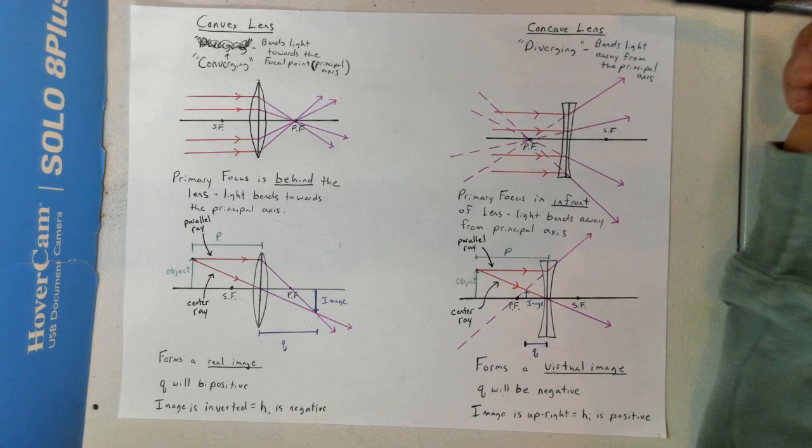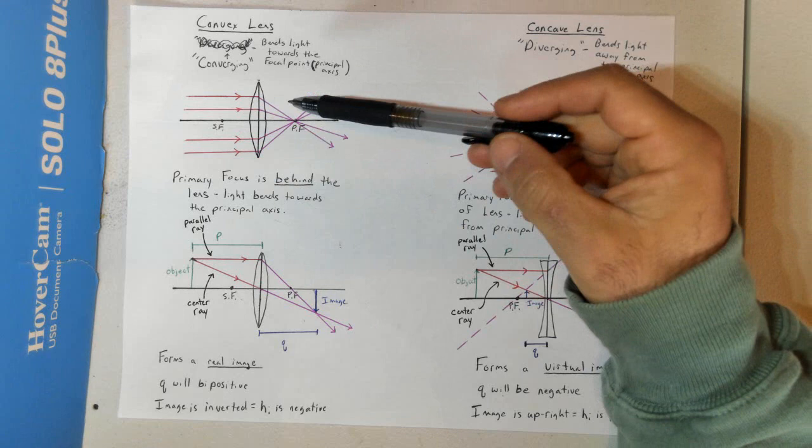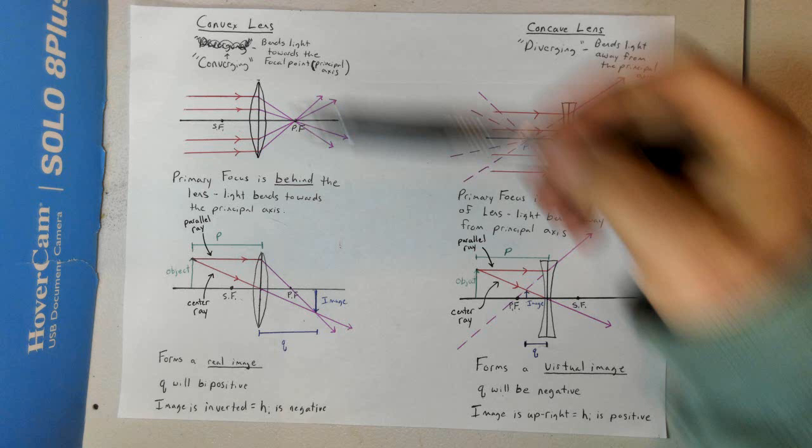We've got two types of lenses: convex lenses and concave lenses. What is different about a lens is it's going to allow light to pass through. Light's going to pass through, but the lens, by shape, is going to bend this light based on its shape.